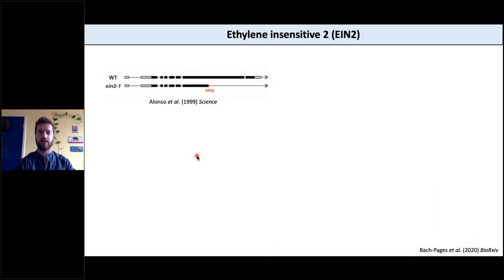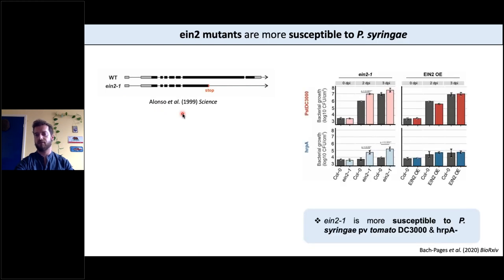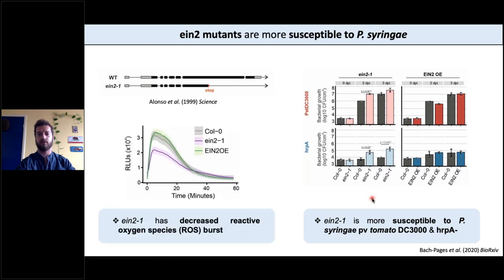Another example is AIM2 — also known as IN2. We got a mutant called AIM2-1, described in a Science paper, and challenged it with both Pseudomonas syringae strains. We see it is susceptible to both strains — more bacterial growth upon infection. Whereas if you overexpress AIM2 in the mutant background, you get restored levels of resistance. This correlates very well with the amount of ROS: if you mutate AIM2, you get a reduced ROS burst, whereas if you overexpress it in the mutant background to complement it, you get normal levels of ROS and normal levels of resistance.